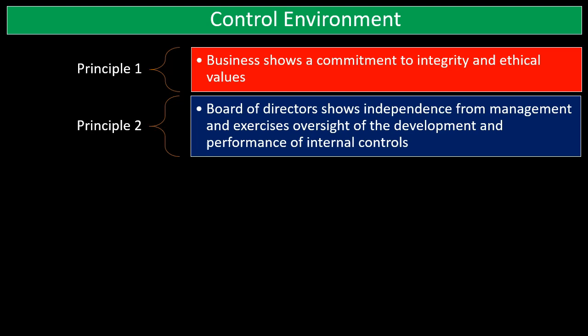Principle number two: the board of directors shows independence from management and exercises oversight of the development and performance of internal control. The board of directors are represented and voted on by the owners — the shareholders — so they should provide oversight over management. The more independence from management, the better the oversight; less independence makes that oversight more difficult.